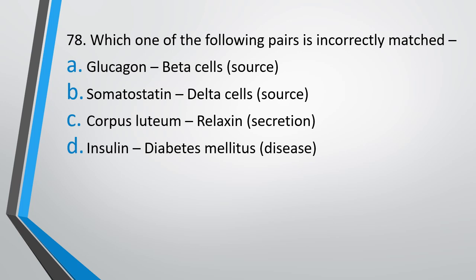Question No. 78. Which one of the following pairs is incorrectly matched? Glucagon — beta cell source; somatostatin — delta cells source; corpus luteum — relaxin secretion; insulin — diabetes mellitus disease. The correct answer is option A, which is incorrectly matched. Insulin comes from beta cells of islets of Langerhans, and glucagon comes from the alpha cells.